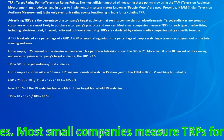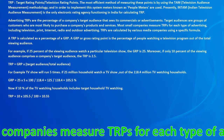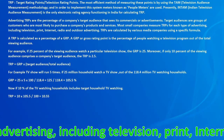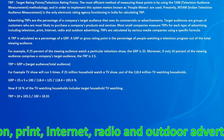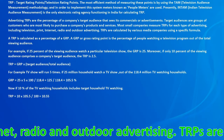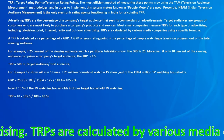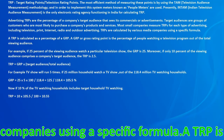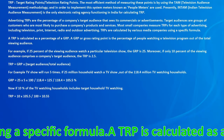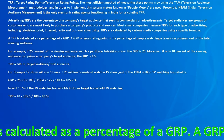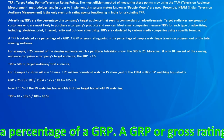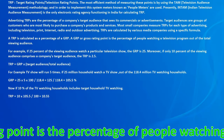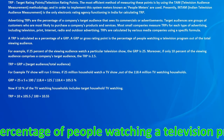TRPs are calculated by various media companies using a specific formula. The TRP is calculated as a percentage of a GRP. The GRP, or Gross Rating Point, is the percentage of people watching a television program out of the total viewing audience. For example, if 25% of the viewing audience watches a particular television show, the GRP is 25.